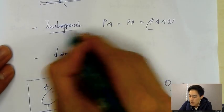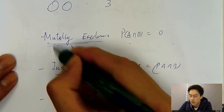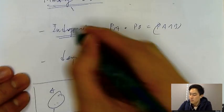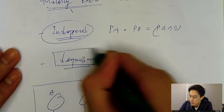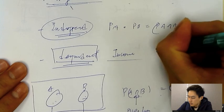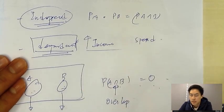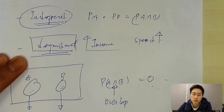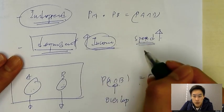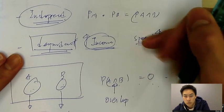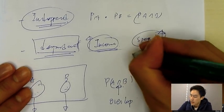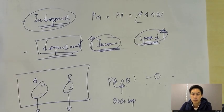Most students confuse mutually exclusive events with independent events, but they are not the same. Let's first look at dependent events. Think of your income and your spending — if your income increases, your spending will probably increase as well because your spending depends on your income. So in this case, spending and income are dependent events.